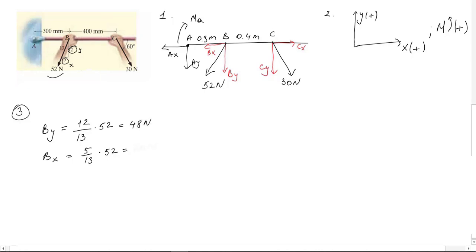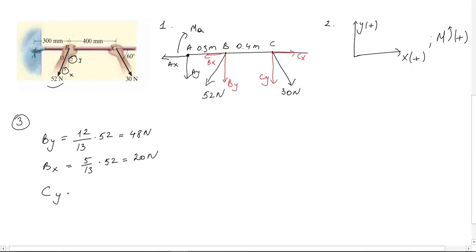For the force acting on C, component in y direction will be sine 60 times 30, and component in x direction will be cosine 60 times 30. Results will be 25.98 newtons and 15 newtons respectively.